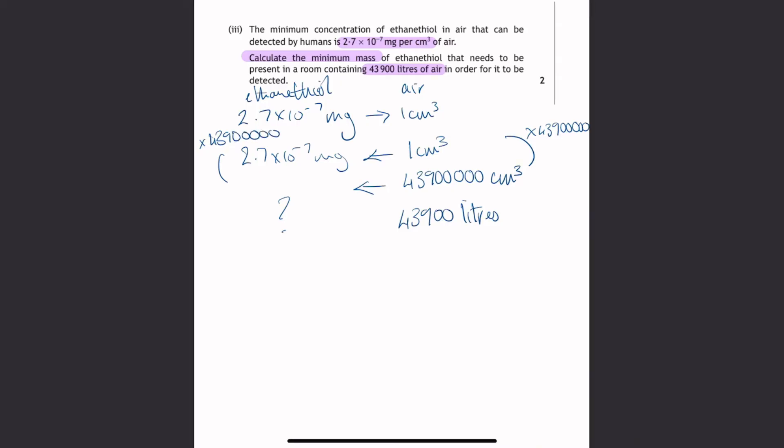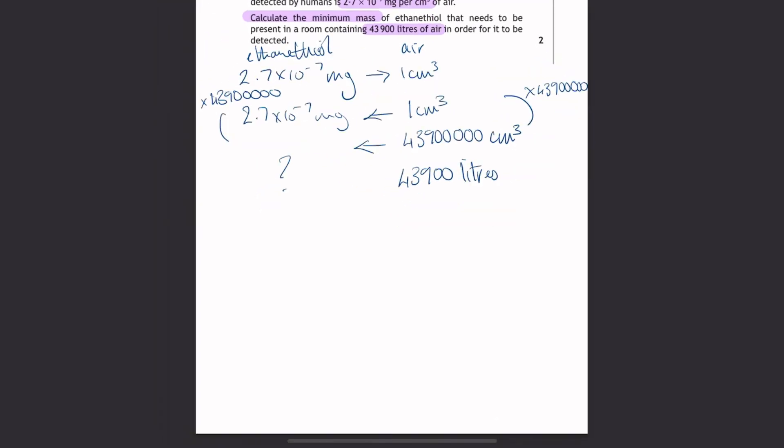So if we put that into our calculators - this is where I wish I had a scientific calculator still. So I'm going to be typing out a lot of zeros here. 0.27 times 43,900,000. And that gives us 11.853 milligrams. So that's how much needs to be in the air for it to be detected.